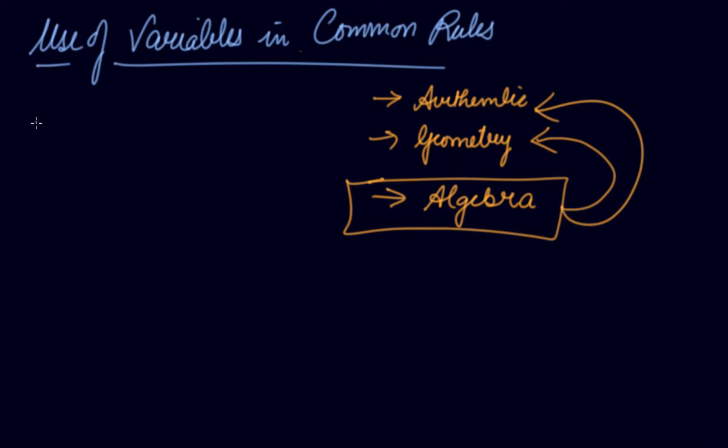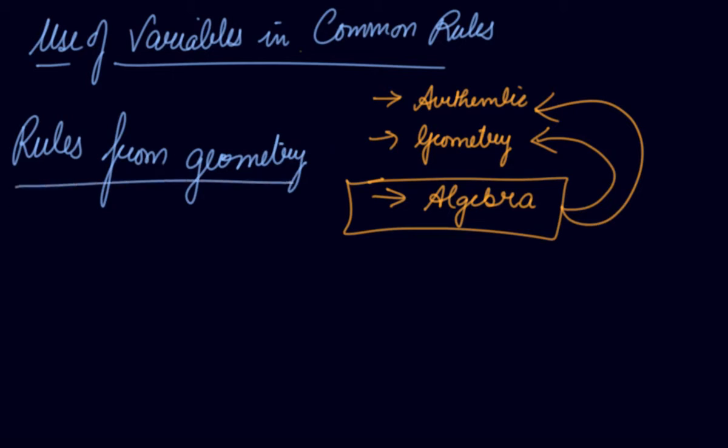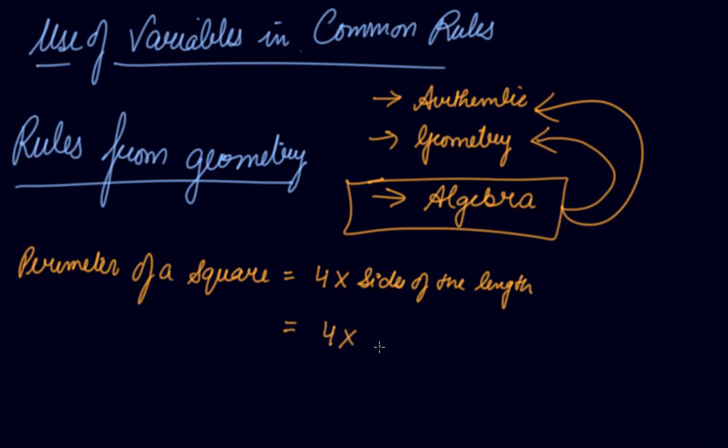Let's understand number one in the rules from geometry. Let's suppose there is a perimeter of a square. We know that the perimeter of square is 4 times the side length of the square. So 4 times S we can say. S here is a side of the square, so S here can be a variable.